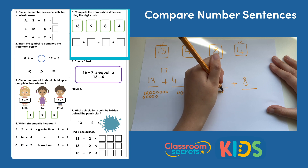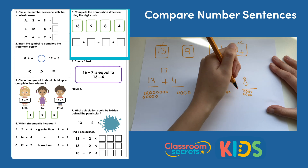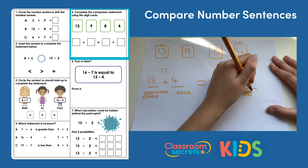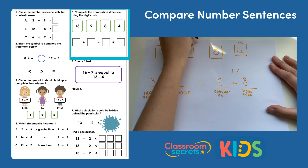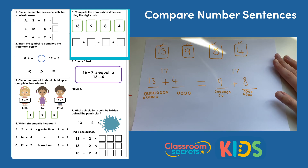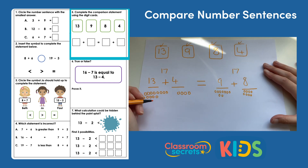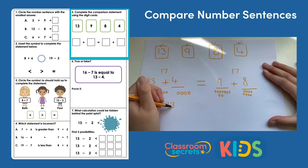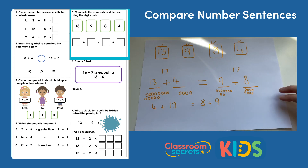So nine dots and eight more. And I'm counting on from nine. Ten, eleven, twelve, thirteen, fourteen, fifteen, sixteen, seventeen. Seventeen is equal to seventeen. I've used all the digit cards and I have written my comparison statement that is correct. So remember, you could mix up the order of this. So for example, rather than having thirteen add four, you could have four add thirteen equals eight add nine, as long as the calculations give the same answer.